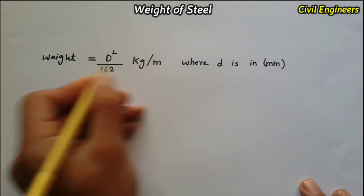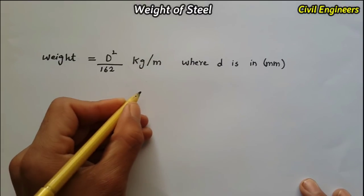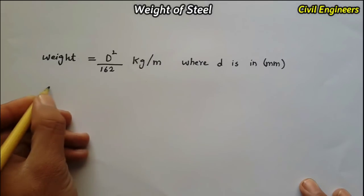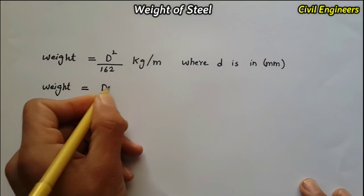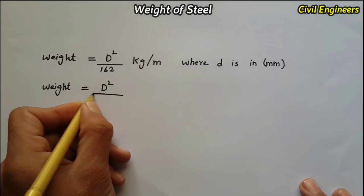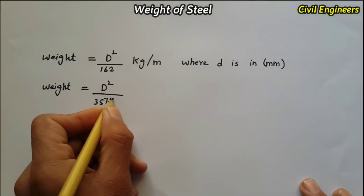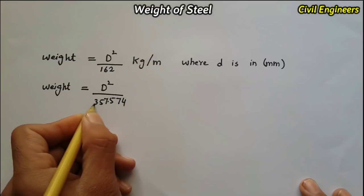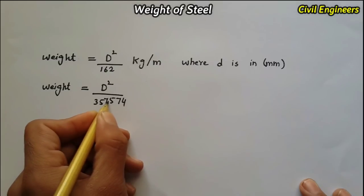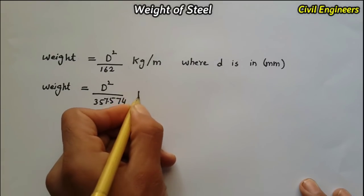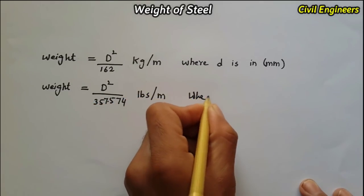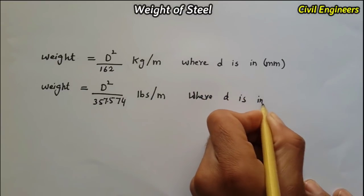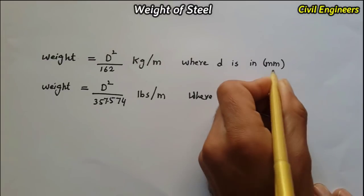The second way we can find out the weight of steel is in lbs per meter. The formula is: weight in lbs per meter equals D squared divided by 357.574. This gives us lbs per meter, where D is in mm, same as above.